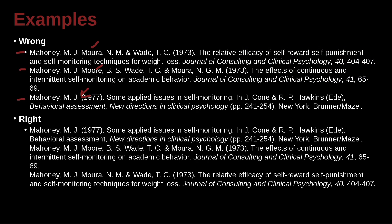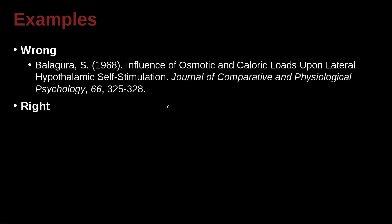If we go ahead and order those correctly, the first one is Mahoney with no other co-authors. Then Mahoney, Moore, M. And then the third one is Mahoney, M.J., Mora. Here it's M-O-U and this one is M-O-O, and O comes before U.